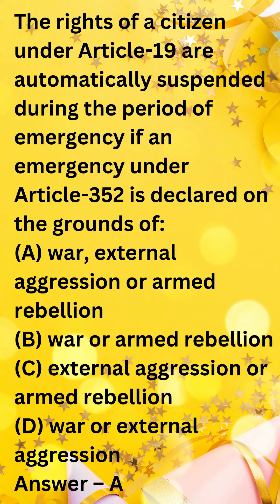Article 19 is automatically revived after the emergency expires. The 44th Amendment Act of 1978 limited the scope of Article 358. It stated that Article 19 can only be suspended when the national emergency is declared due to war or external aggression, and not in the case of armed rebellion.